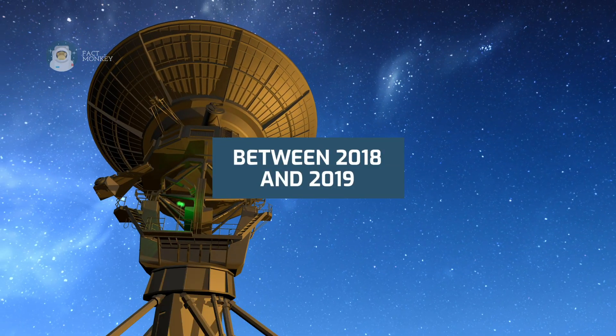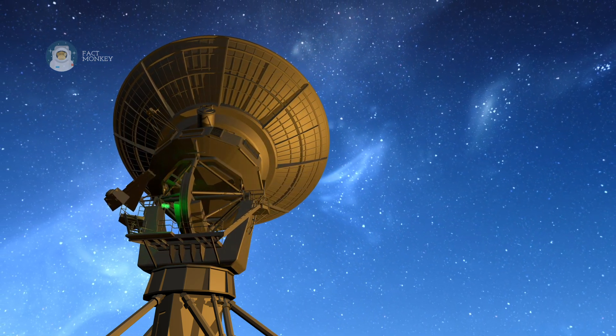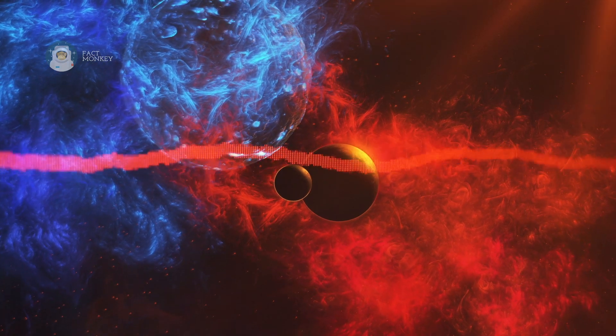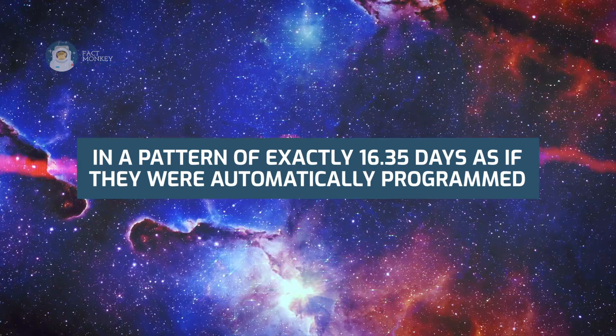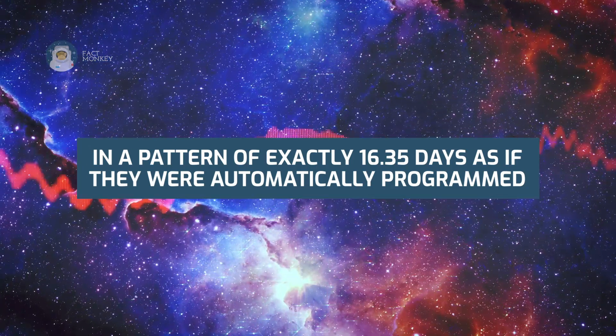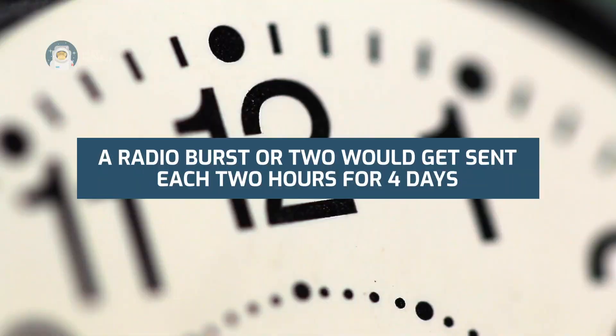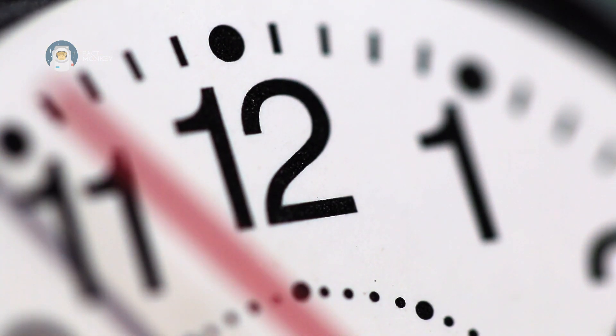Between 2018 and 2019, now this is where things start to get bizarre. It was detected that there were specific fast radio bursts that kept happening in a pattern of exactly 16.35 days as if they were automatically programmed. A radio burst or two would get sent each two hours for four days, and after that they would go completely silent for 12 days before repeating again.